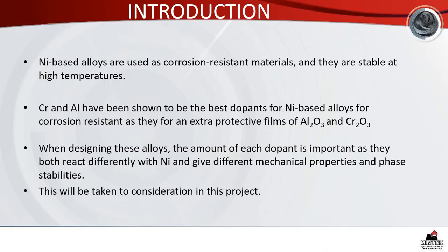High pressures and high temperatures in the petrochemical industries tend to lead to corrosion, and as such there is a need for new corrosion resistant materials. Nickel-based alloys are known to be good corrosion resistant at high temperatures and will be investigated in this project. Chromium and aluminium are normally used as dopants in nickel-based alloys because of the extra protective films they provide.